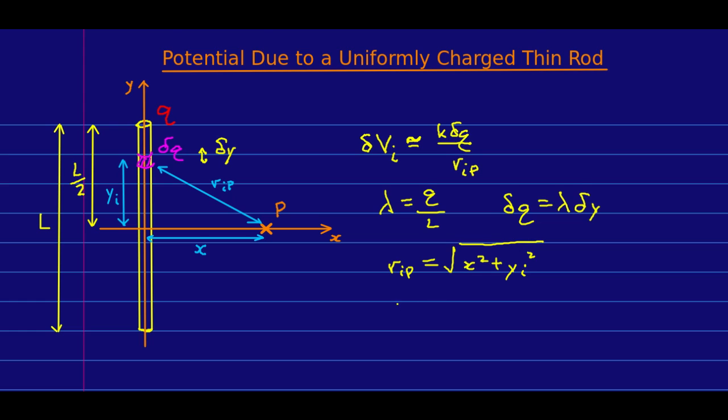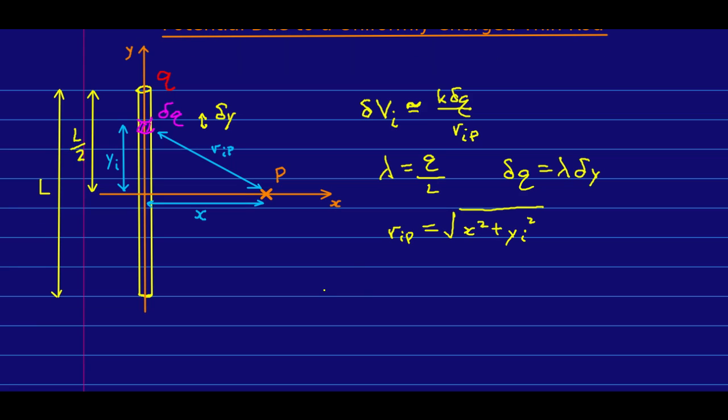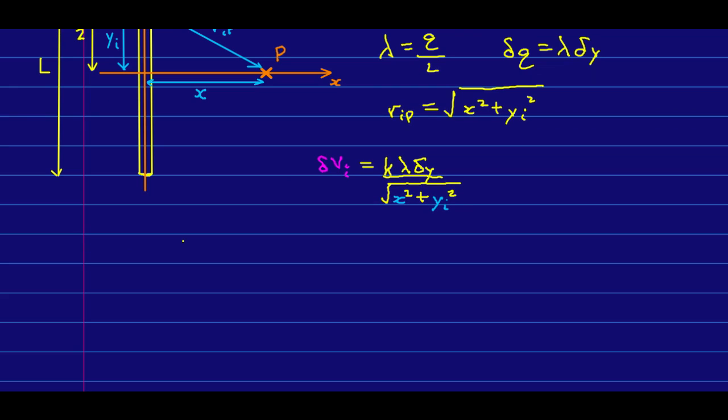At which point, I can put the whole thing together into my potential due to one piece of the rod. Now, I'll build the integral. So, the total potential at point P will be approximately the sum of all the potentials due to the individual bits, delta vi, and so that is just a sum over i.